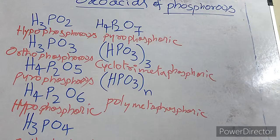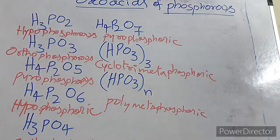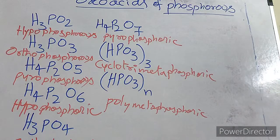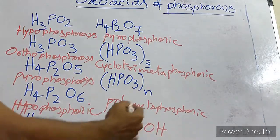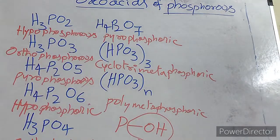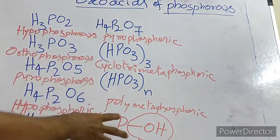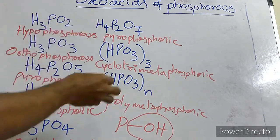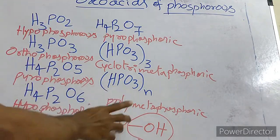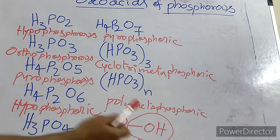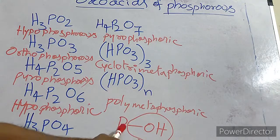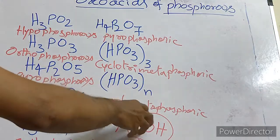Phosphorus forms a number of oxoacids as we have seen. Any acid has a basicity. Basicity depends upon the number of P-OH groups. H+ will go, making it an acid. So basicity depends upon the number of OH groups attached to the phosphorus. If I have one P-OH bond, it is a monobasic acid; two, dibasic acid; three, tribasic acid. The basicity is decided by the P-OH bond.